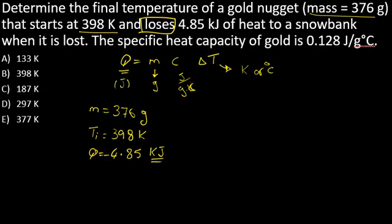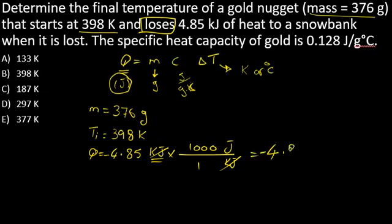It's in kilojoules—do I need to convert the unit? Yes, because Q needs to be in Joules. Converting kilojoules to Joules: one kilo gives me a thousand. That gives me -4.85 × 10³ Joules.